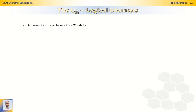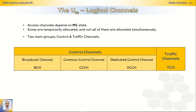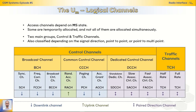The UM logical channels. The other type of channels in the UM interface are the logical channels, which are access channels that depend on the state of the mobile station. Some channels are allocated temporarily and not all channels are available simultaneously. There are two main groups of logical channels: the control channels and the traffic channels. Channels can be classified depending on the signal direction into uplink, downlink, and paired direction channels, or into either point-to-point or point-to-multipoint channels.